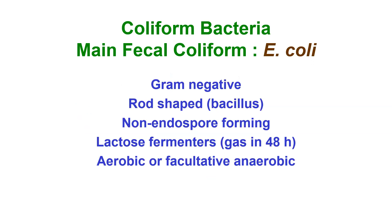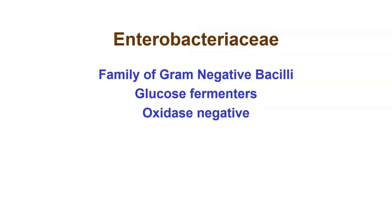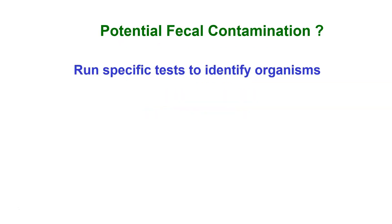The main fecal coliform is E. coli. It is a gram-negative, rod-shaped bacterium — we call them bacilli. It is non-endospore-forming, it is a lactose fermenter, it produces gas in 48 hours, and it is aerobic or facultatively anaerobic. The family it belongs to is the Enterobacteriaceae, a family of gram-negative bacilli. They are all glucose fermenters and they are all oxidase negative — two very distinct characteristics that we look for.